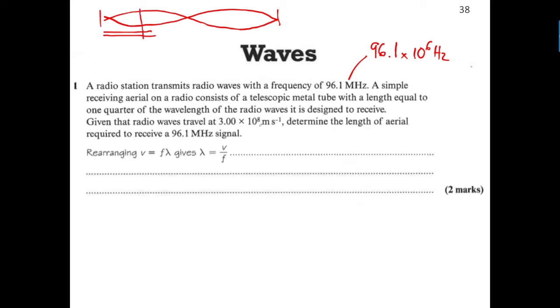We're also told that the velocity V = 3 × 10⁸. We need to determine the length of the aerial, so we need to find out the wavelength. They've hidden the question by talking about the length of the aerial, but they really want to know the wavelength.